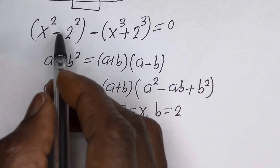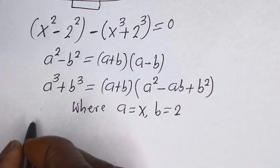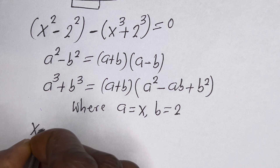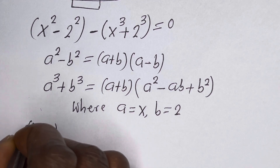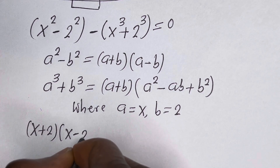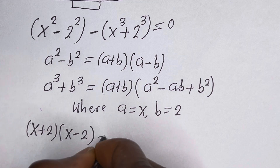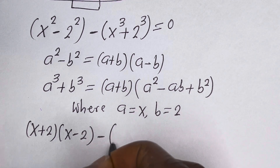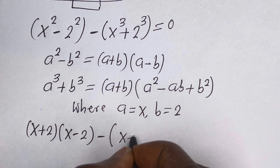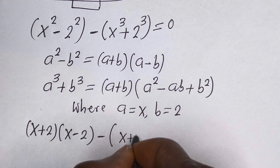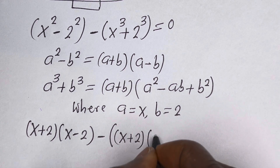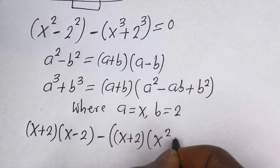Substituting here, we have s plus 2 bracket s minus 2, then minus s plus 2 bracket s squared minus 2s plus 4, all equal to 0.